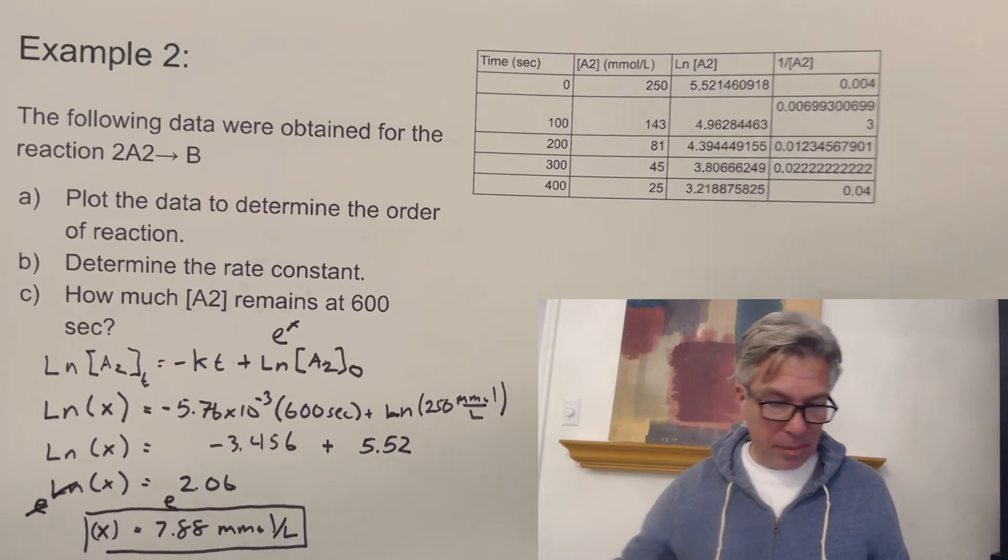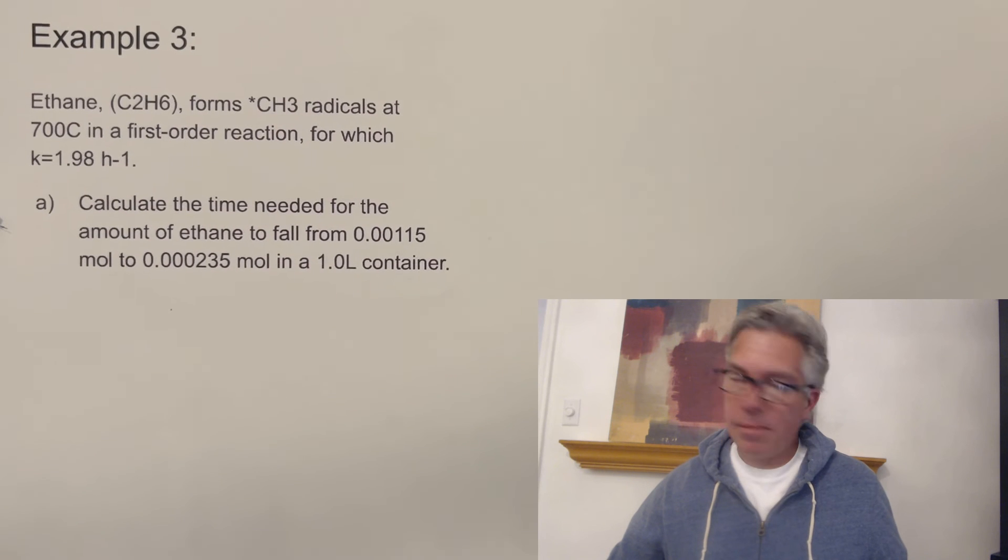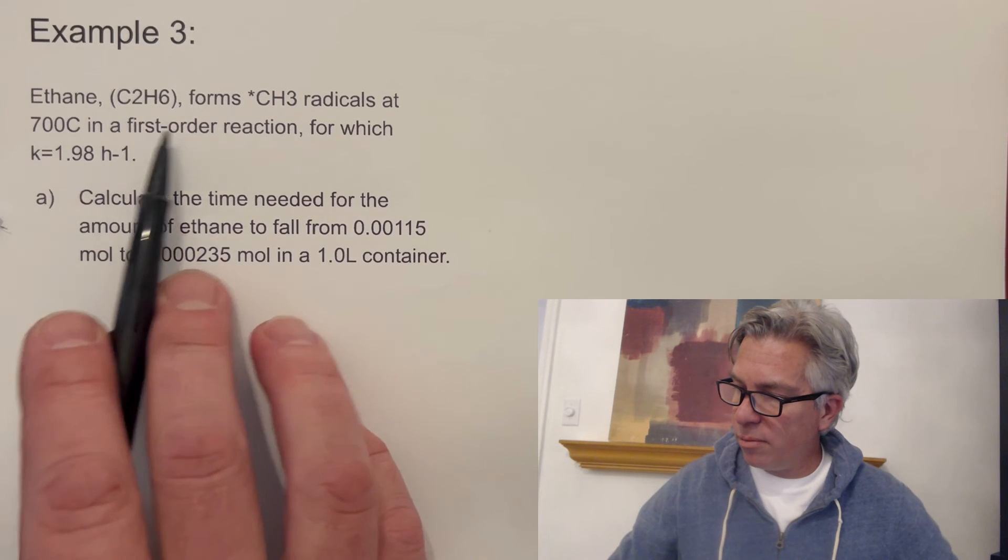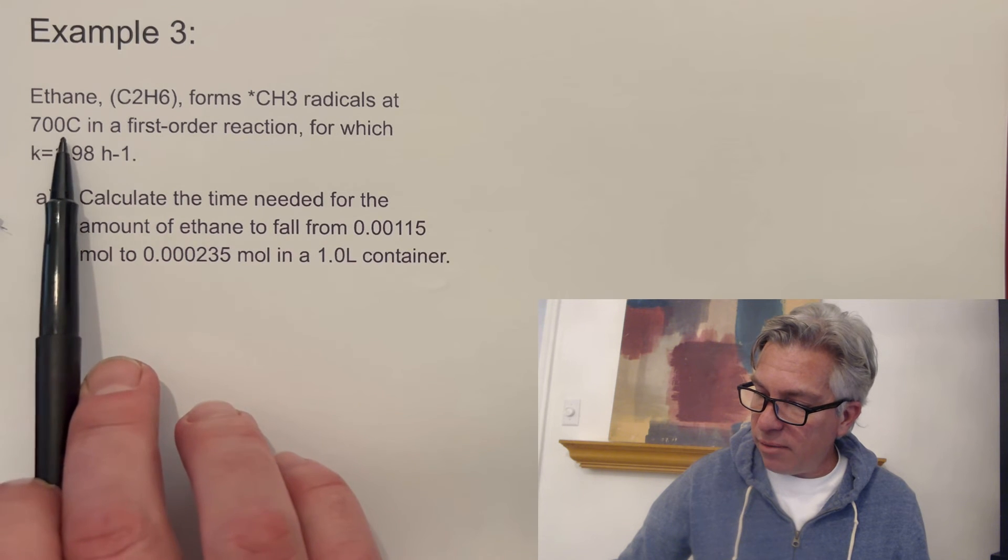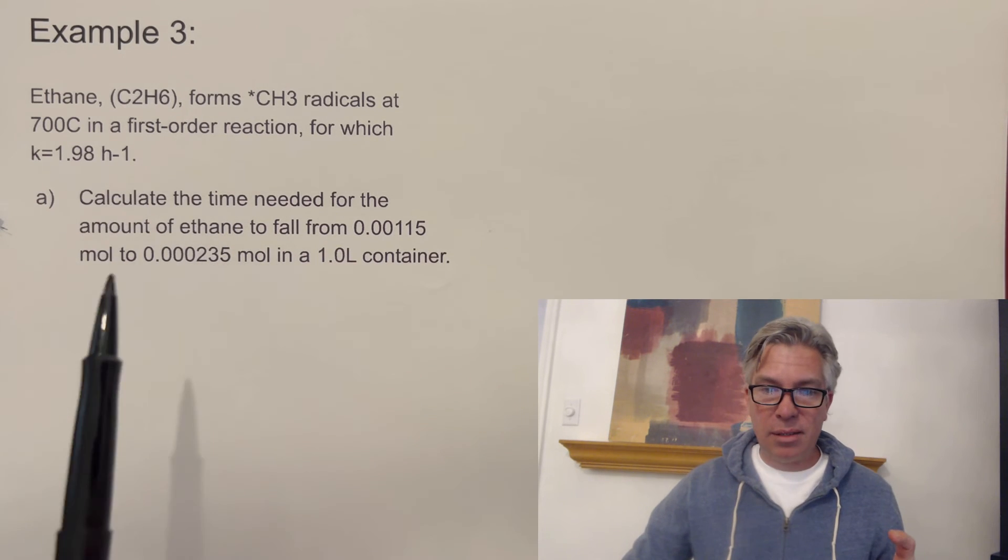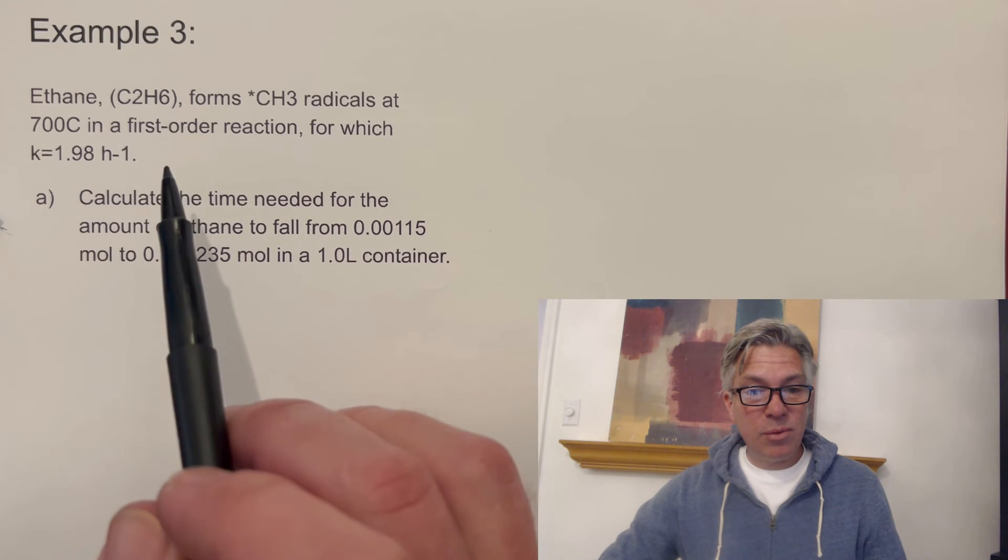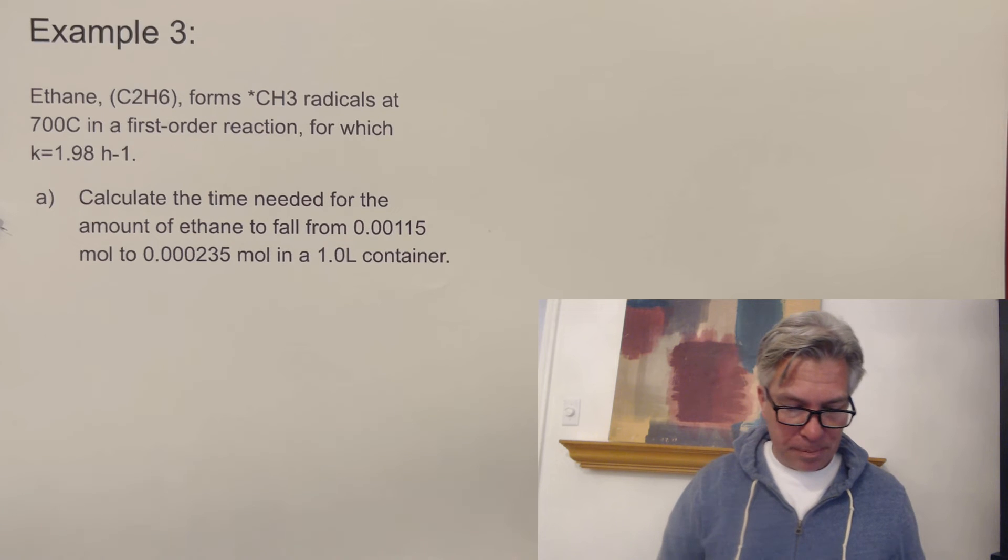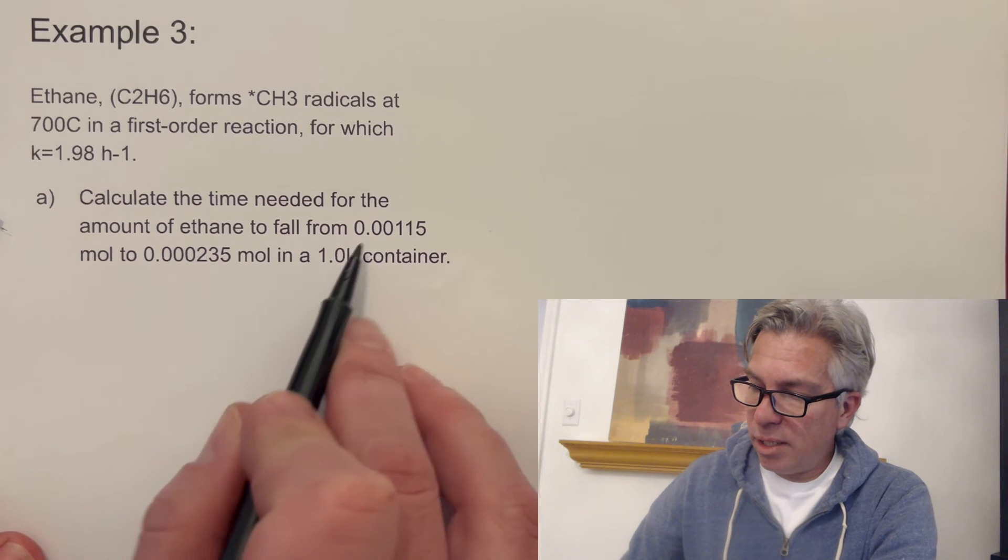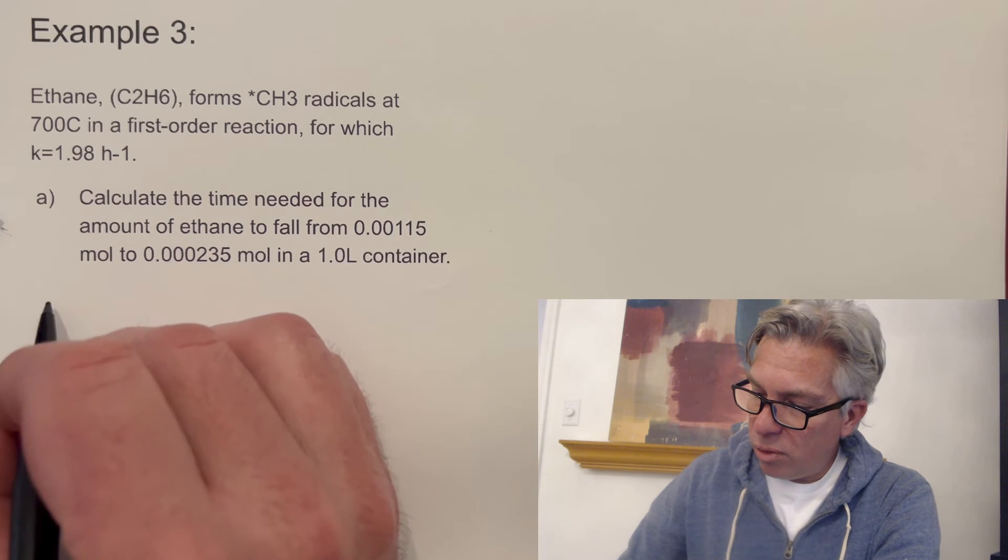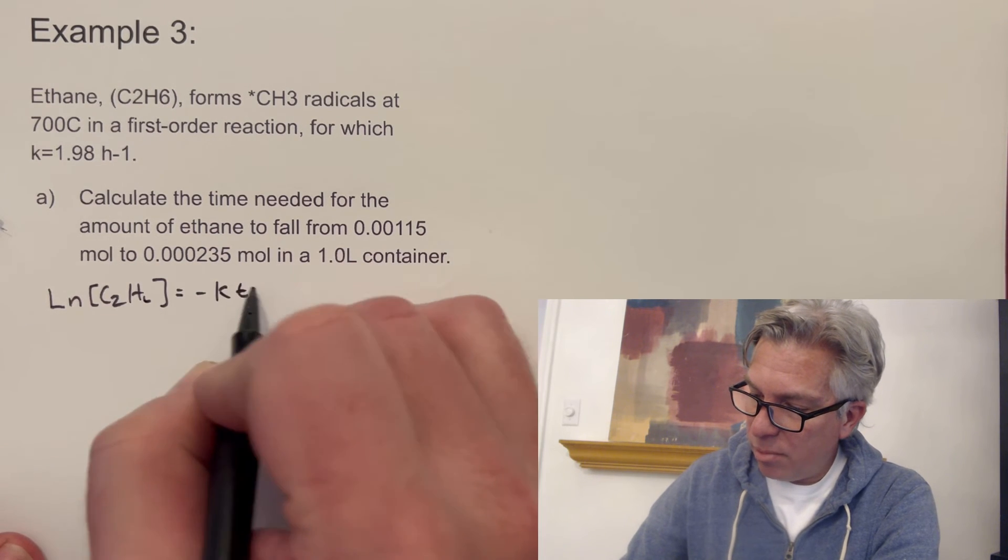Now I'm going to show you one more, and then I'm going to have you try one like we usually do here on this channel, to get you through your chemistry homework. Here's example three. Now it says here, ethane C2H6 forms CH3 radicals. Basically it breaks apart into two charged ions, radicals at 700 degrees Celsius in a first order reaction. They tell us it's first order and they gave us the rate constant. Notice there's no data table over here because no data is given, but you know what, because we have the rate constant and we know it's first order, we don't need the data, which is kind of nice. Calculate the time needed for the amount of ethane to fall from this many moles to this many moles in a one liter container. And it's a one liter container. So this is actually the molarity also.